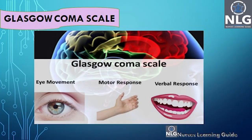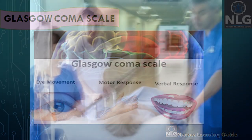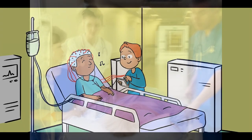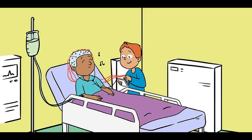Hi friends, welcome to Nurses Learning Guide. Today we are going to discuss the Glasgow Coma Scale. This is one of the important tools in assessing the consciousness of a patient. The experts at the University of Glasgow in Scotland developed the GCS in 1974. It's the most commonly used scale for measuring decreases in consciousness, including coma.